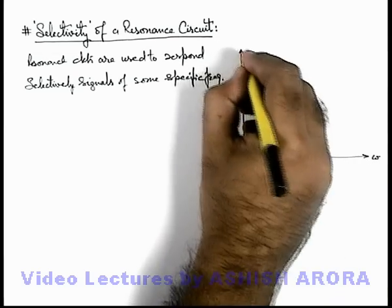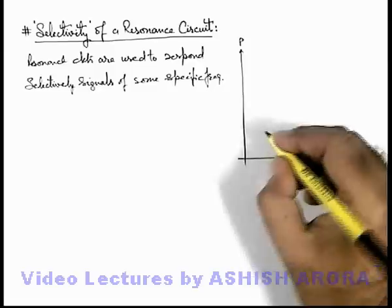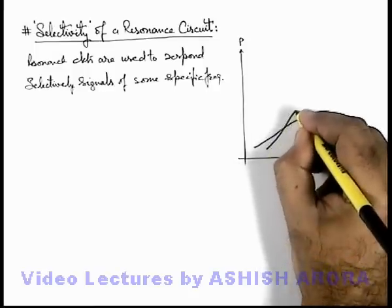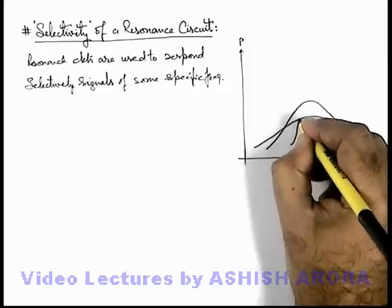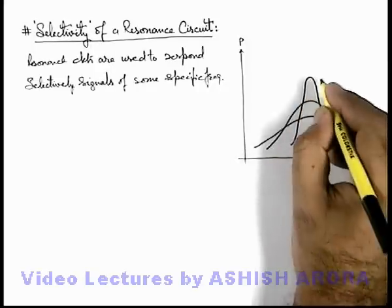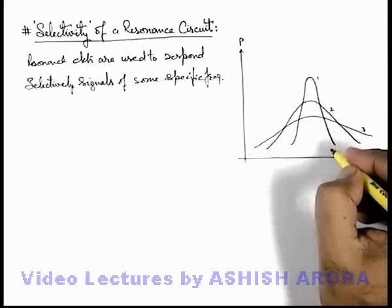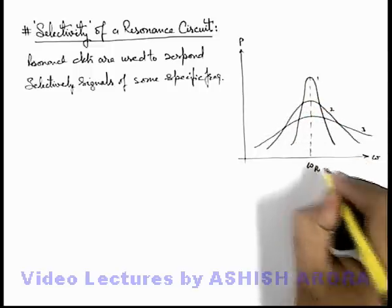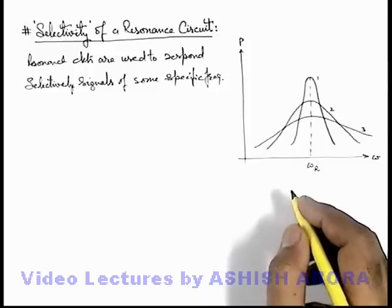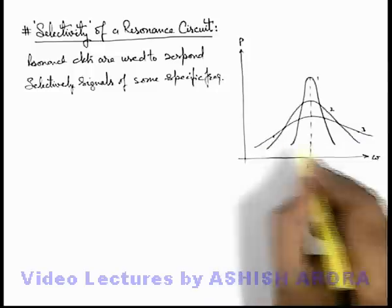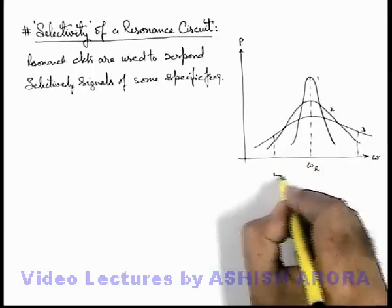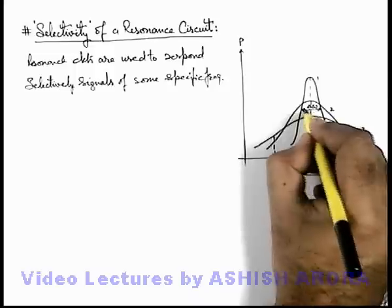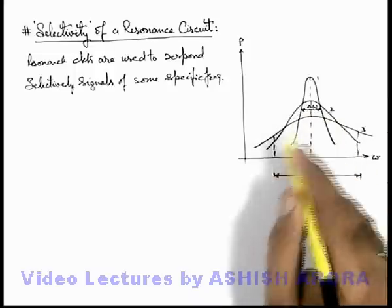Here we draw the variation curves of circuit power with frequency. In case of circuit power at different frequencies, the curves can be drawn in three different ways. The basic difference in the 3 circuits — circuit 1, 2, and 3 — is that all 3 share the same resonating frequency omega r, but the bandwidth for half-power frequency is significantly large for circuit 3, significantly low for circuit 1, and moderate for circuit 2.